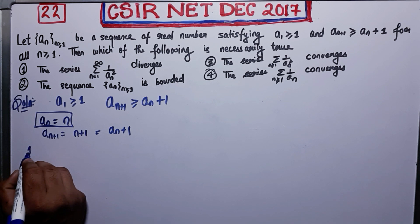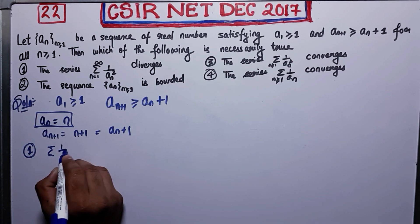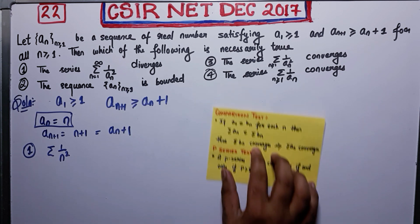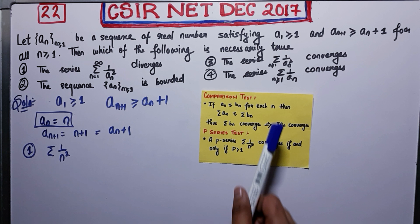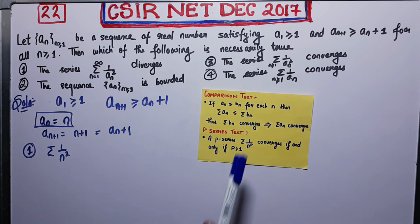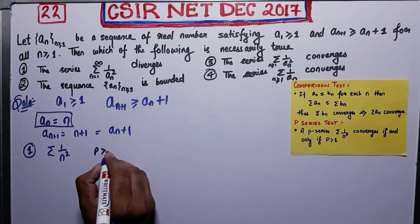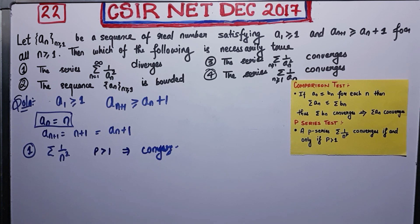Now for option 1, the series summation 1 over n². Using our example a_n = n, this becomes the series summation 1/n². By the p-series test — a very important test in analysis — summation 1/n^p converges if and only if p > 1. Here p = 2 > 1, so this converges. But option 1 says it diverges, therefore option 1 is incorrect.